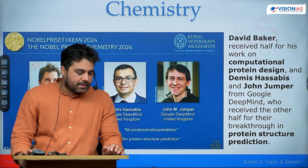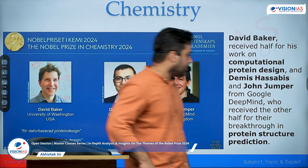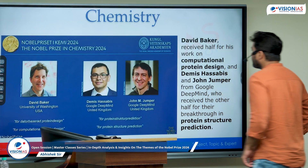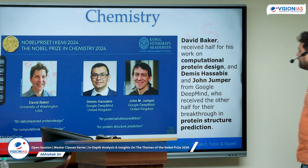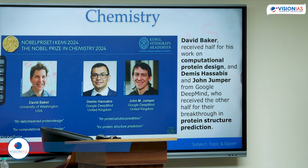The Nobel Prize in Chemistry was given to three scientists. Half of the prize was given to David Baker, who received half for his work on computational protein design, and Demis Hassabis and John Jumper from Google DeepMind, who received the other half for their breakthrough in protein structure prediction.